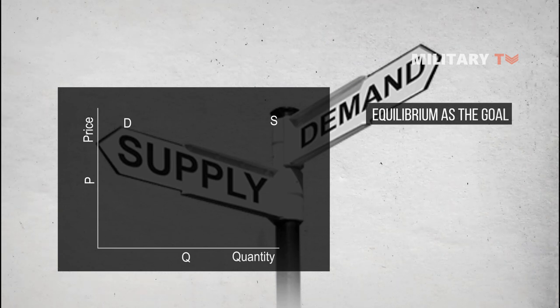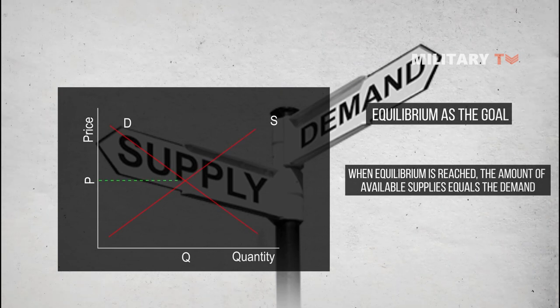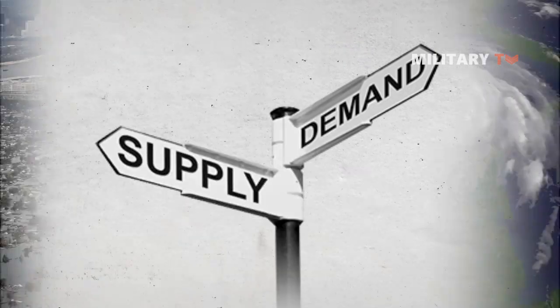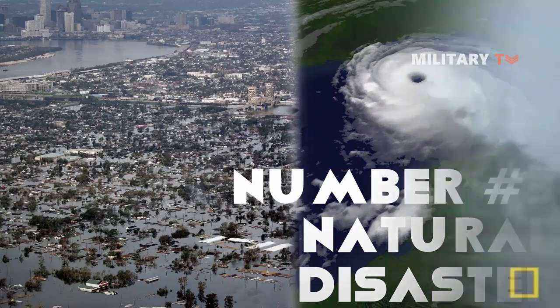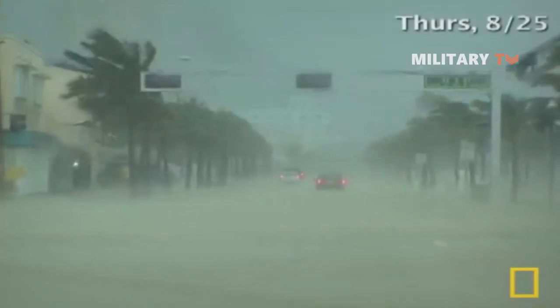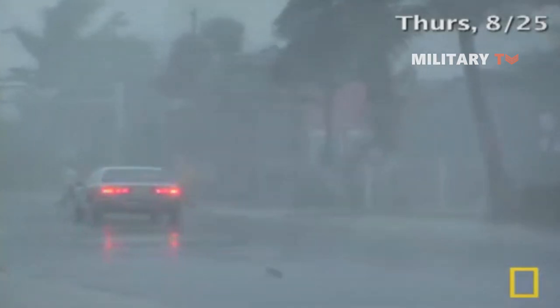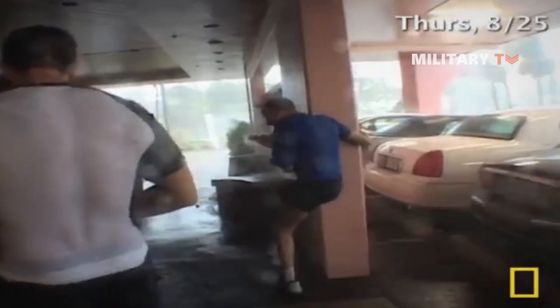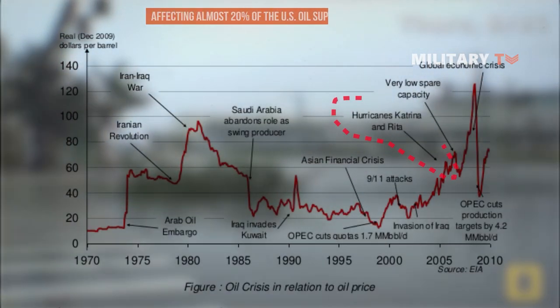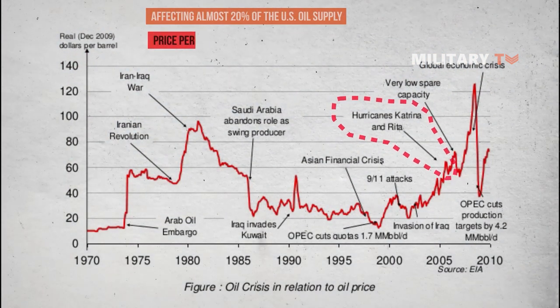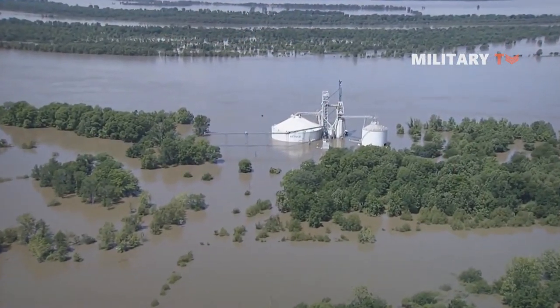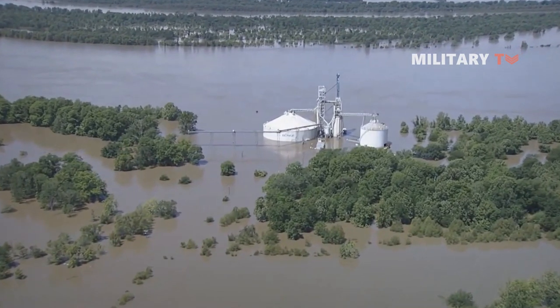Equilibrium is the goal: when equilibrium is reached, the amount of available supply equals the demand. Number 3: Natural Disasters. Natural disasters are another factor that can cause oil prices to fluctuate. For example, when Hurricane Katrina struck the southern US in 2005, affecting almost 20% of the US oil supply, it caused the price per barrel of oil to rise by $13. In May 2011, the flooding of the Mississippi River also led to oil price fluctuation.